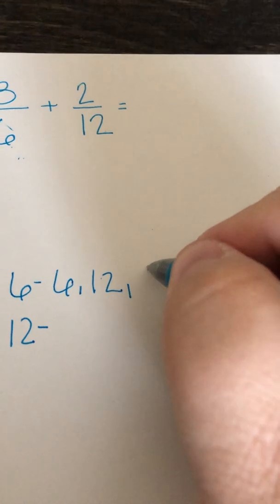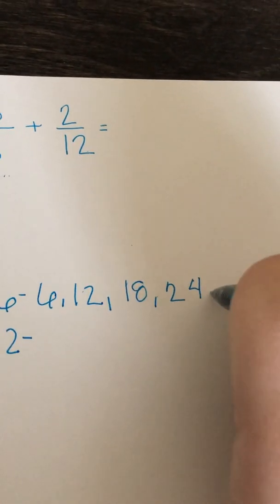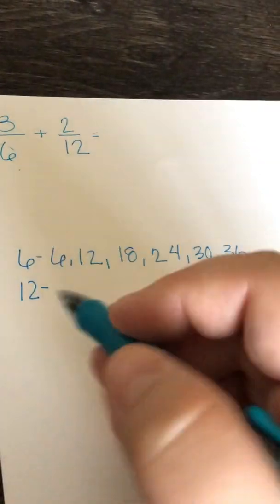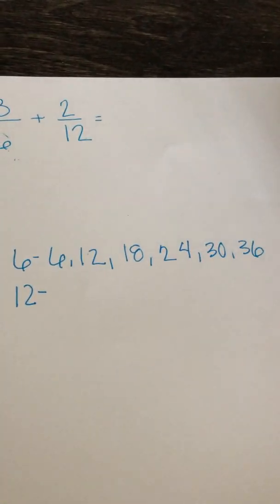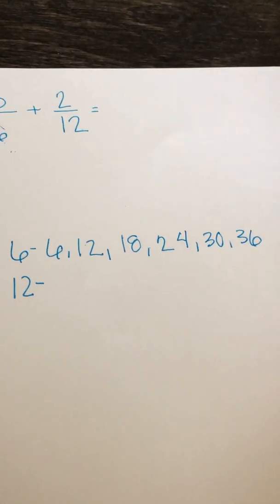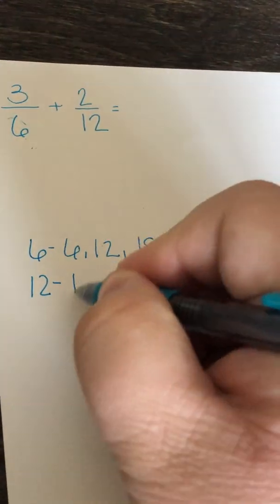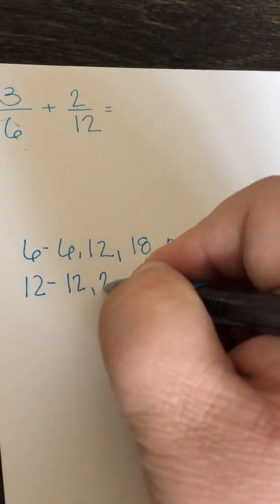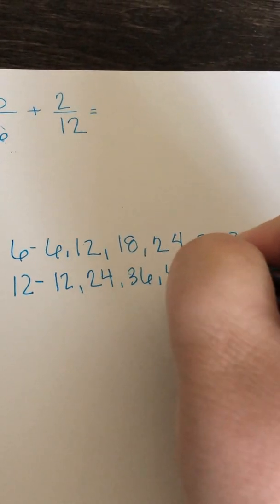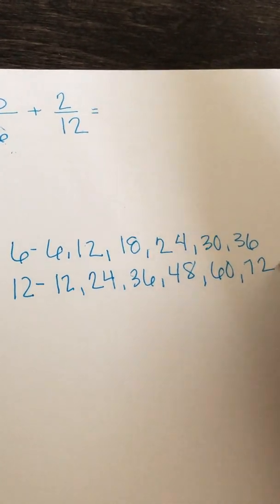...18, 24, 30, 36. And I think I'm going to end there. Now I need to find my first multiples of 12. Remember, 12 is just a 10 and a 2. So if you break it down like that, it'll be easy. So 12, 24, 36, 48, 60, 72. And we'll stop there.